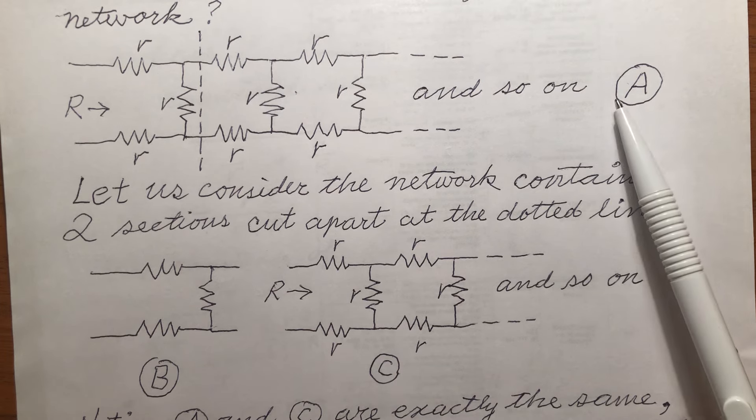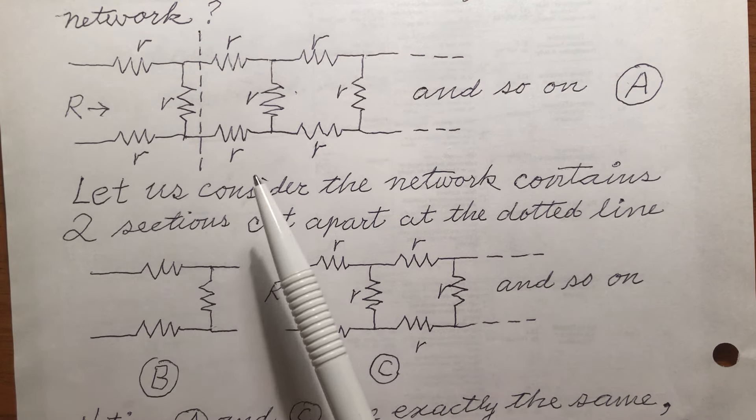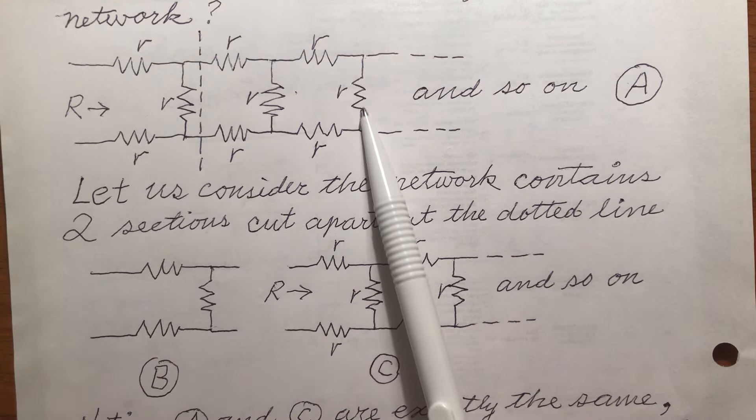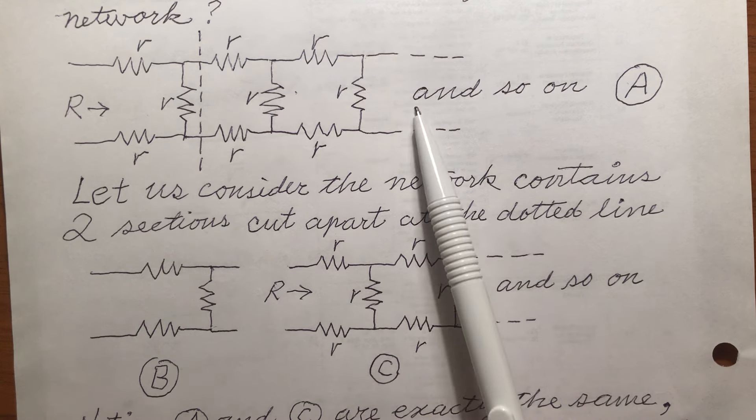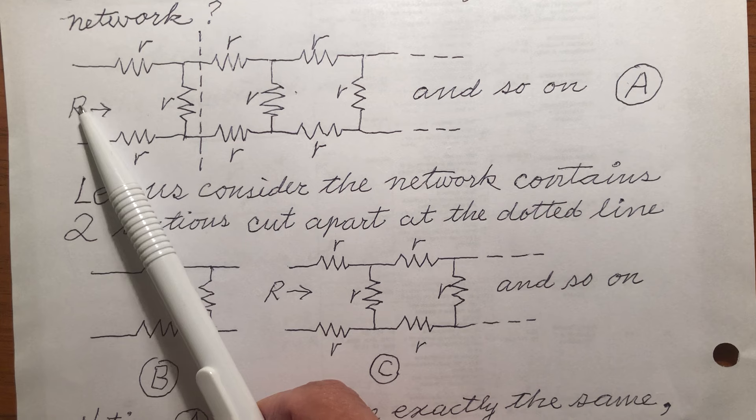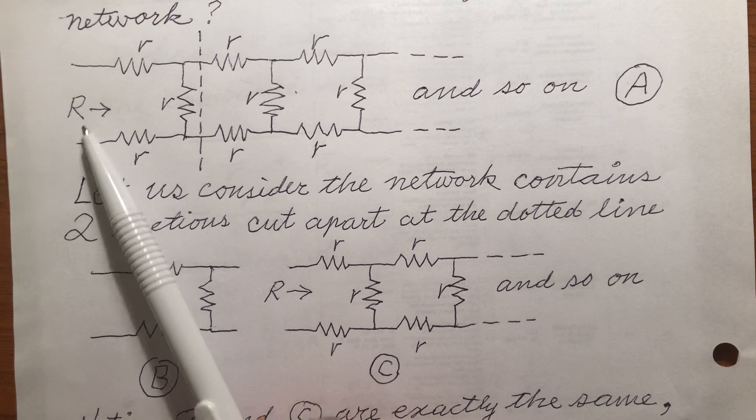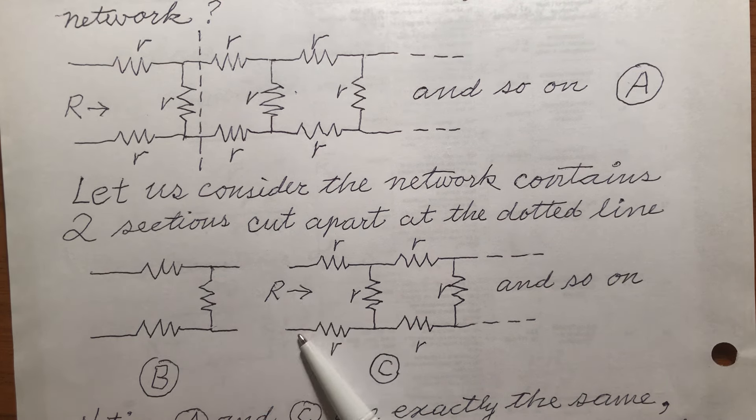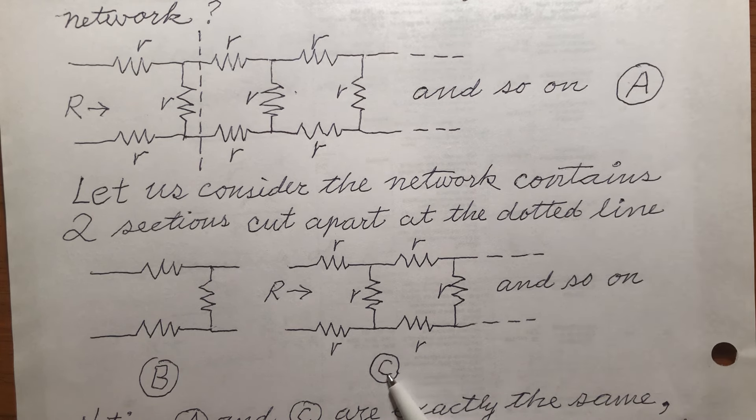Let's compare A and C. We see that they are essentially equivalent. This extends indefinitely long. So this is equivalent to this. If I call the resistance at these two terminals capital R, then here, across these two terminals, the resistance is also capital R because we mentioned A and C are exactly the same.